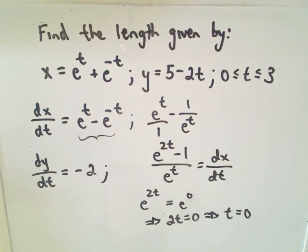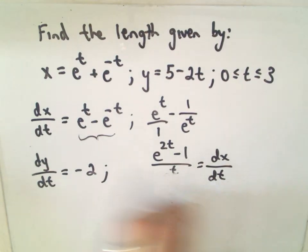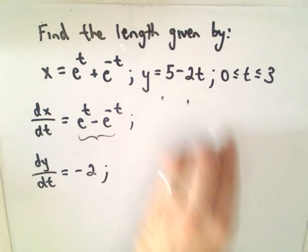So, for t values greater than 0, the derivative either has to be strictly positive or strictly negative. In either case, the curve that's being traced out is either moving strictly to the left or strictly to the right. So, it will be transversed exactly once.